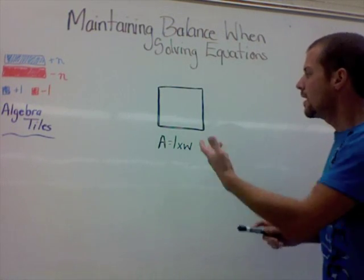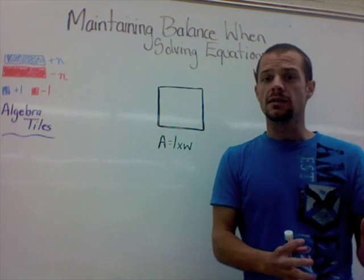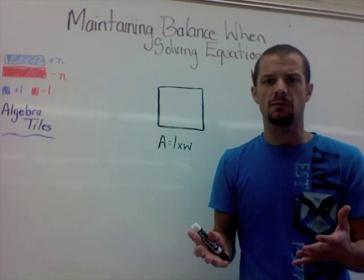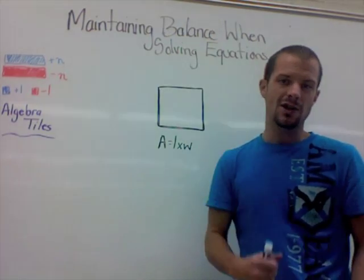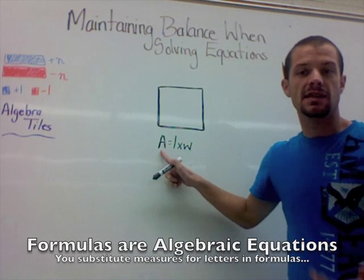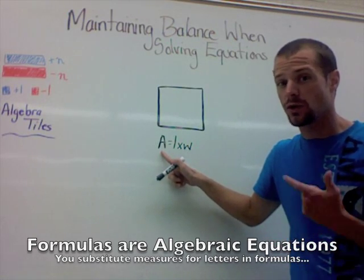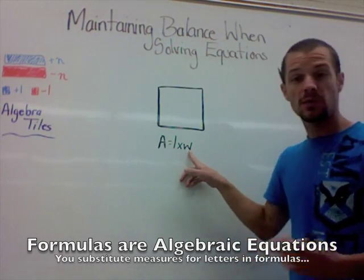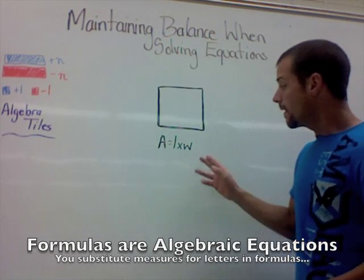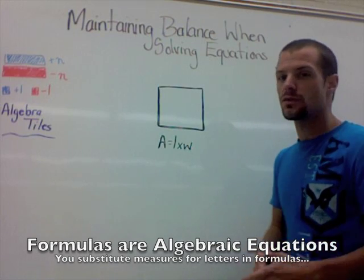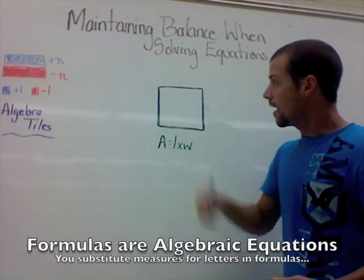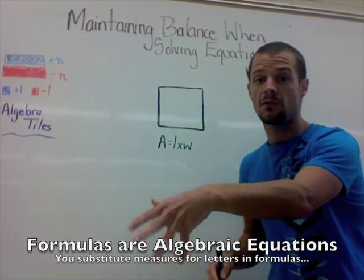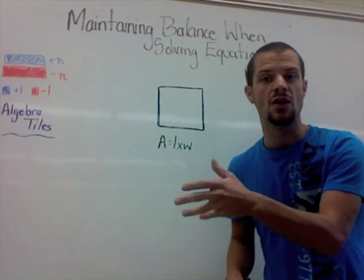You already know from your previous grades what the formula is to find the area of a rectangle, and you know how to work with formulas. Formulas are equations. We know that A represents area — that's what we're trying to find. L stands for length and W stands for width. This general formula is something you're quite experienced with — substituting numbers in for those unknown letters, those unknown variables.